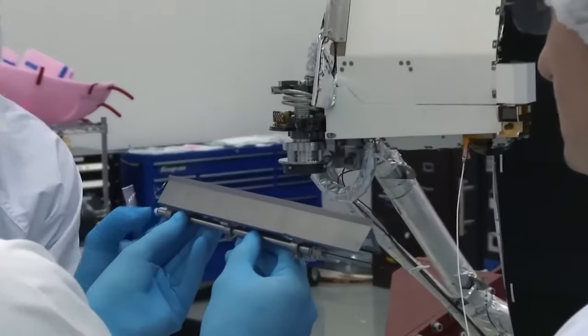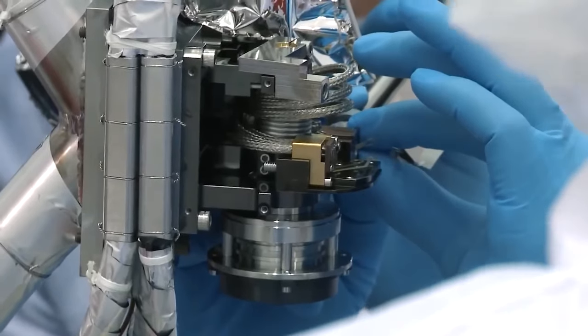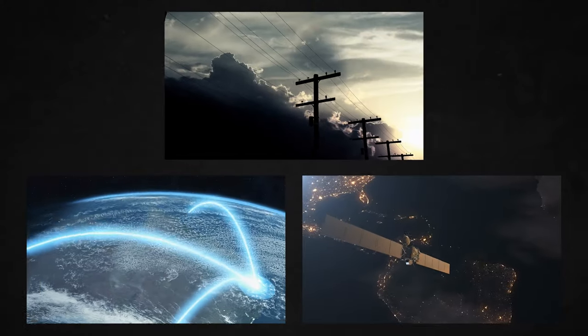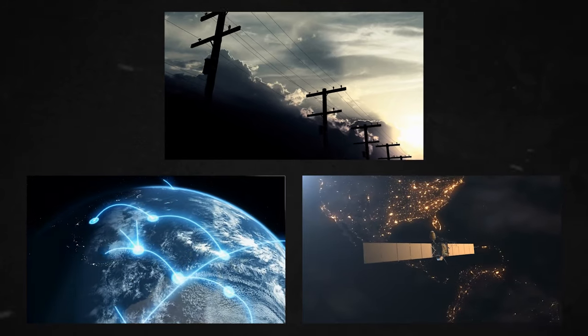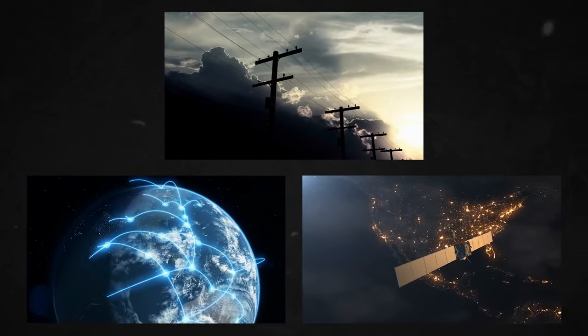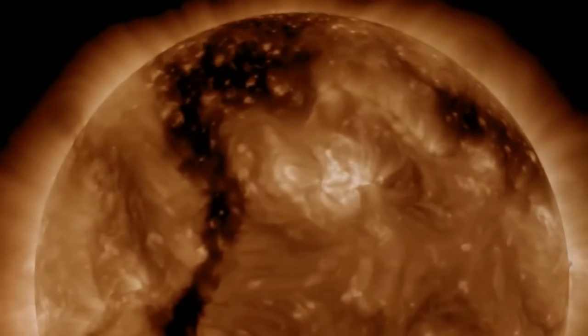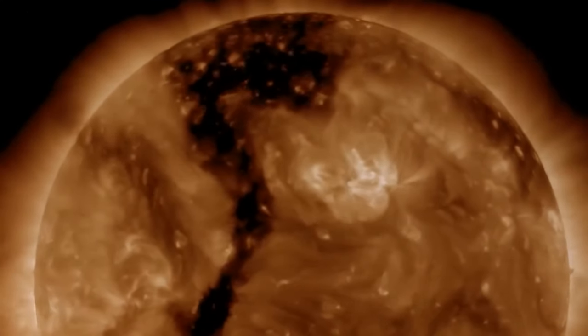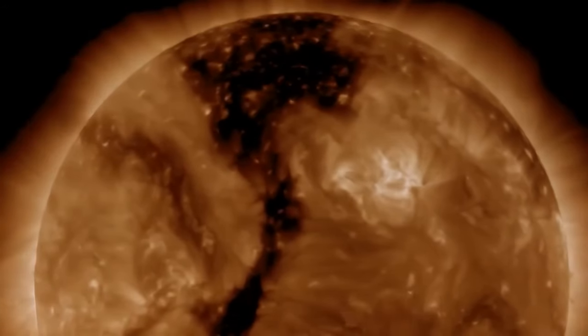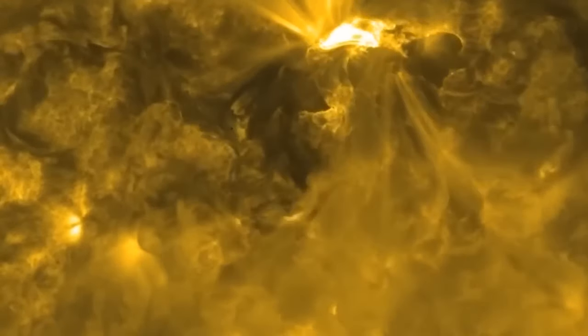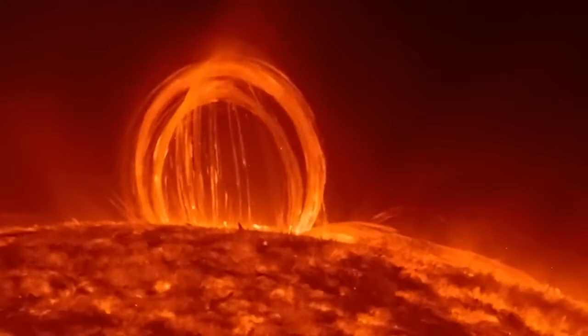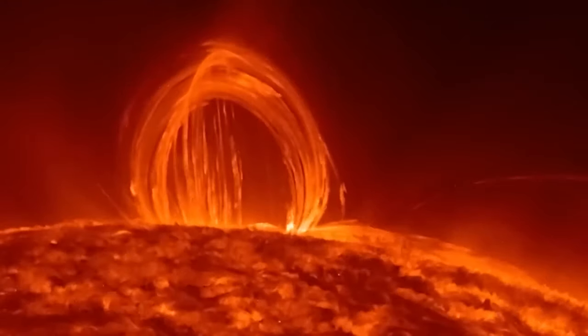These storms are responsible for the mesmerizing aurora borealis displays, but they also have the potential to disrupt power grids, communication networks, and satellites in Earth's orbit. The vast heliosphere sweeps across the solar system well beyond Pluto's orbit. A lengthy windsock is the best way to describe the heliosphere's shape as it follows the Sun's path, says NASA. The European Space Agency has said that, at its nearest point, the heliosphere extends around 100 astronomical units from the Sun.